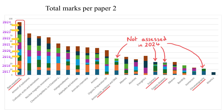Topics on the right-hand side come up less frequently and are worth fewer marks. It's worth noting which topics were not assessed in 2024, as those become slightly more likely to appear in 2025. These include amino acids, proteins and DNA, polymers, organic analysis, and chromatography. Since chromatography is a required practical, that makes it quite likely to come up in 2025.